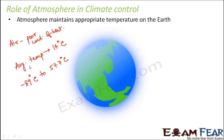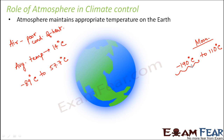On the contrary, if we compare the temperature of the earth with that of the moon, the temperature range on the moon is very huge — from minus 190 degrees Celsius to 110 degrees Celsius. Certain regions of the moon may be as cold as minus 190 degrees Celsius while others reach 110 degrees Celsius. Under such extreme conditions, it is not possible for life forms to exist. So the atmosphere definitely helps maintain an appropriate temperature on the earth.